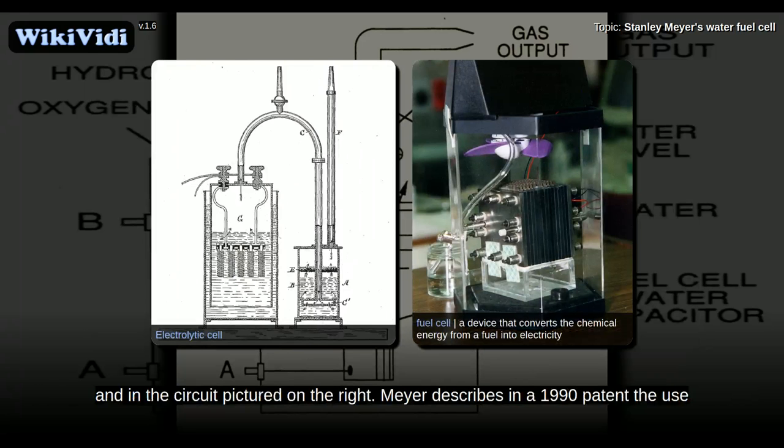Meyer describes in a 1990 patent the use of a water fuel cell assembly and portrays some images of his fuel cell water capacitor. According to the patent, in this case, the term fuel cell refers to a single unit of the invention comprising a water capacitor cell that produces the fuel gas in accordance with the method of the invention.